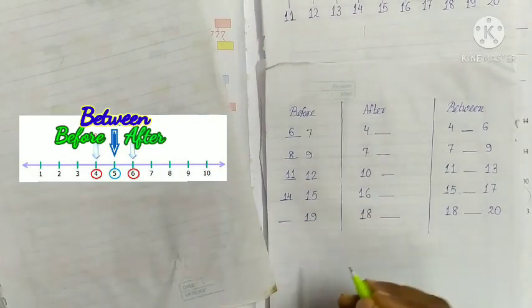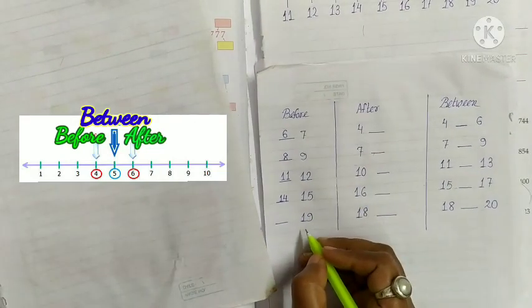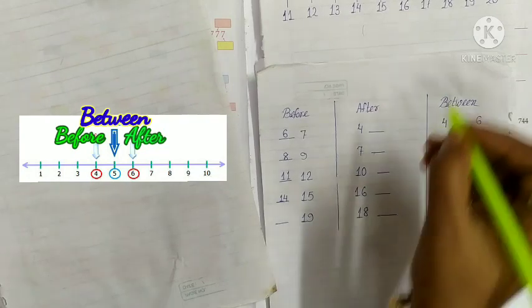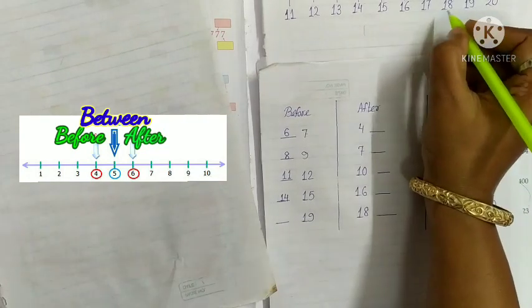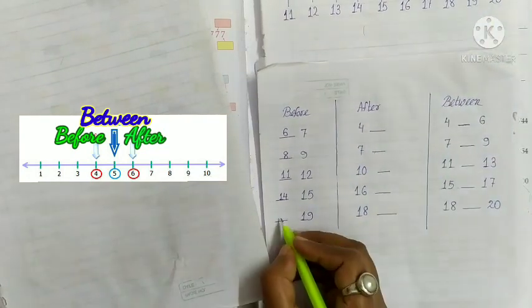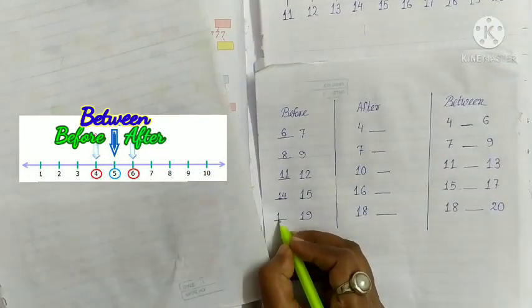Next, 19. What comes before 19? 18. Write 18.